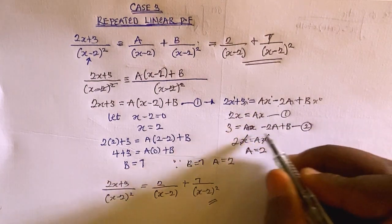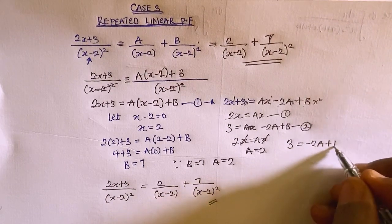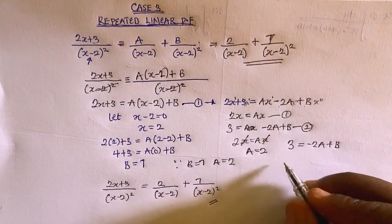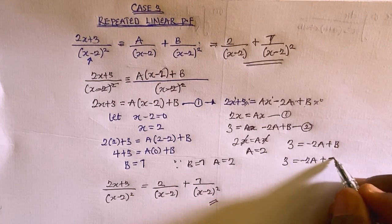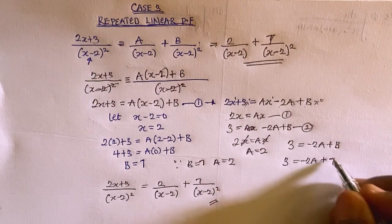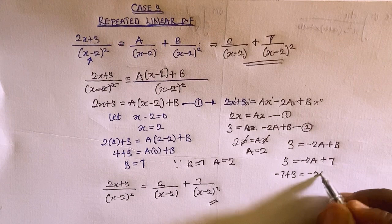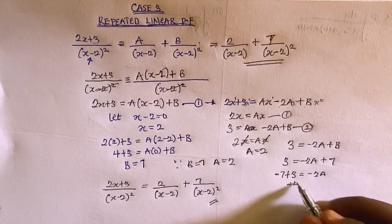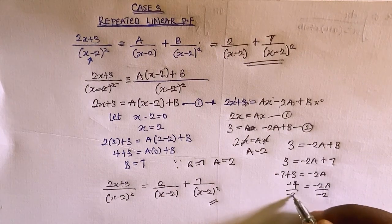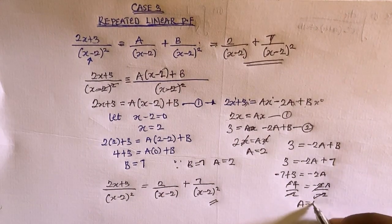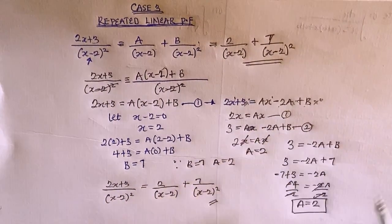We can verify using equation 2: 3 equals minus 2A plus B. Substituting B equals 7: 3 equals minus 2A plus 7. Collecting like terms: minus 7 plus 3 equals minus 2A, so minus 4 equals minus 2A. Dividing both sides by minus 2 gives A equals 2, confirming our answer either way.